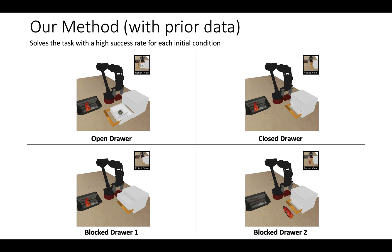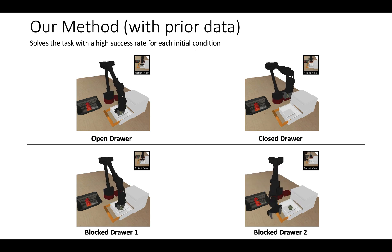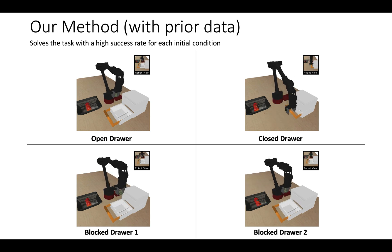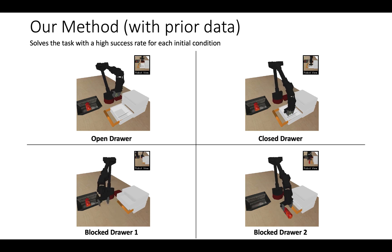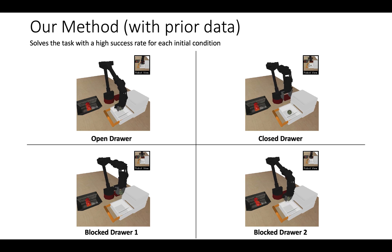We now visualize the performance of the policy learned by our method. We see that in addition to solving the task from seen initial conditions, the policy is also able to execute the task from unseen initial conditions, which indicates that our method is successfully able to leverage our unlabeled prior data.